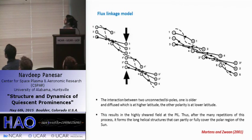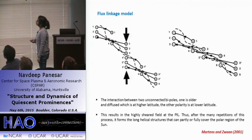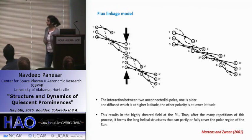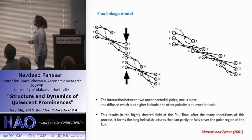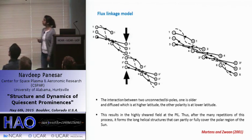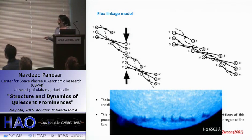This is the flux linkage model, an extension of the flux-rope model. The difference is that in this model they assume two unconnected bipoles — one at lower latitude and one at higher latitude of the Sun. This model is for the formation of longer chains of filaments, such as polychron filaments. Due to flux convergence and cancellation at the polarity inversion line, which results in a highly sheared field, after many repetitions it forms a long helical structure seen at the polar region.